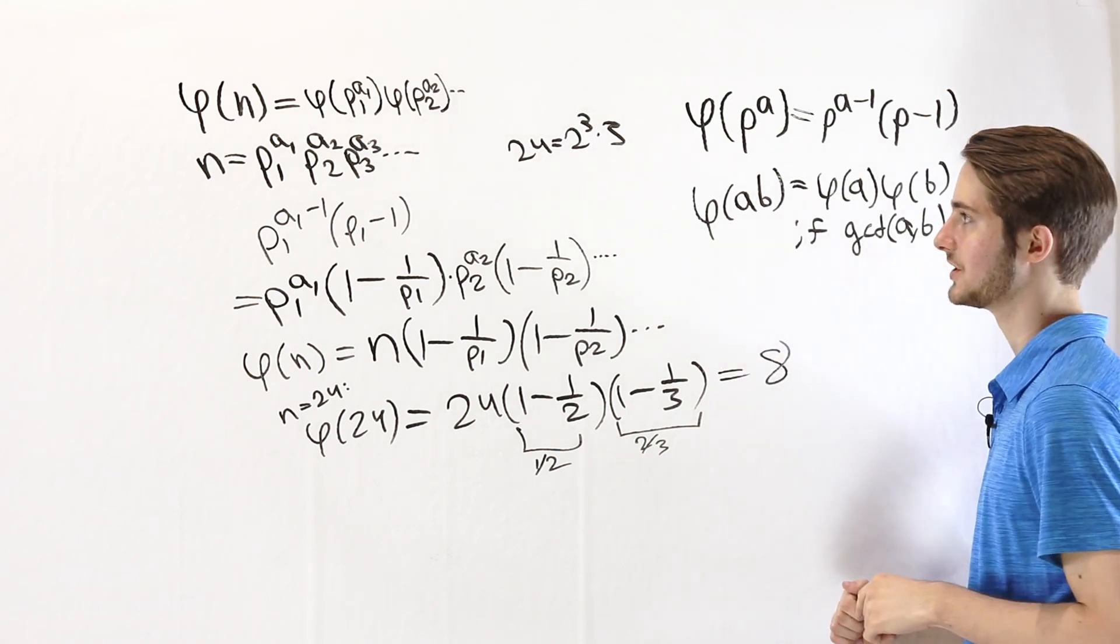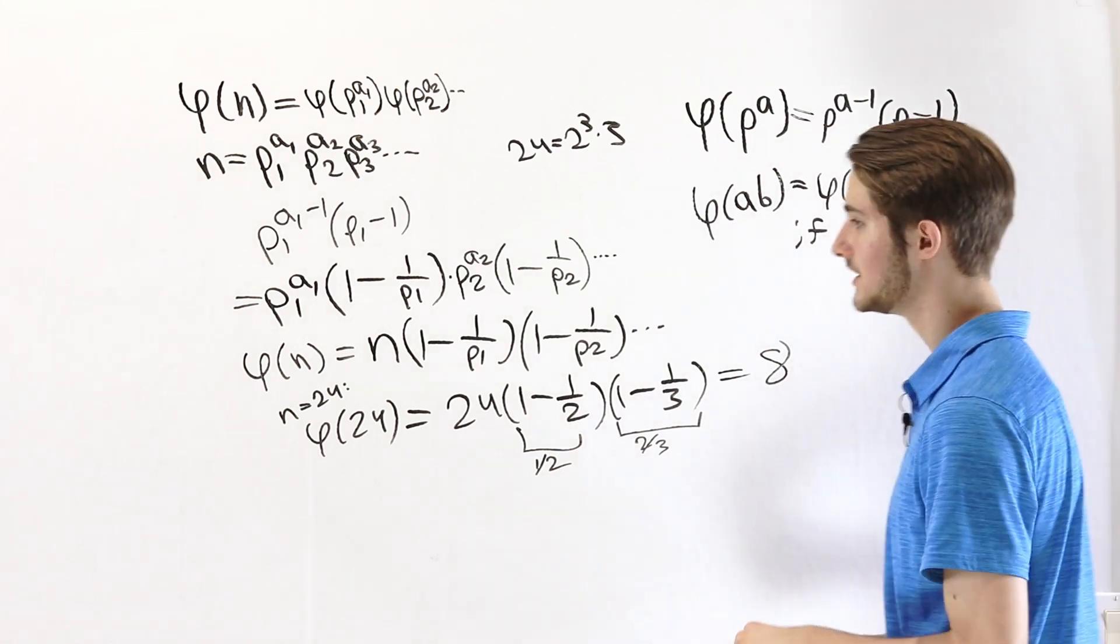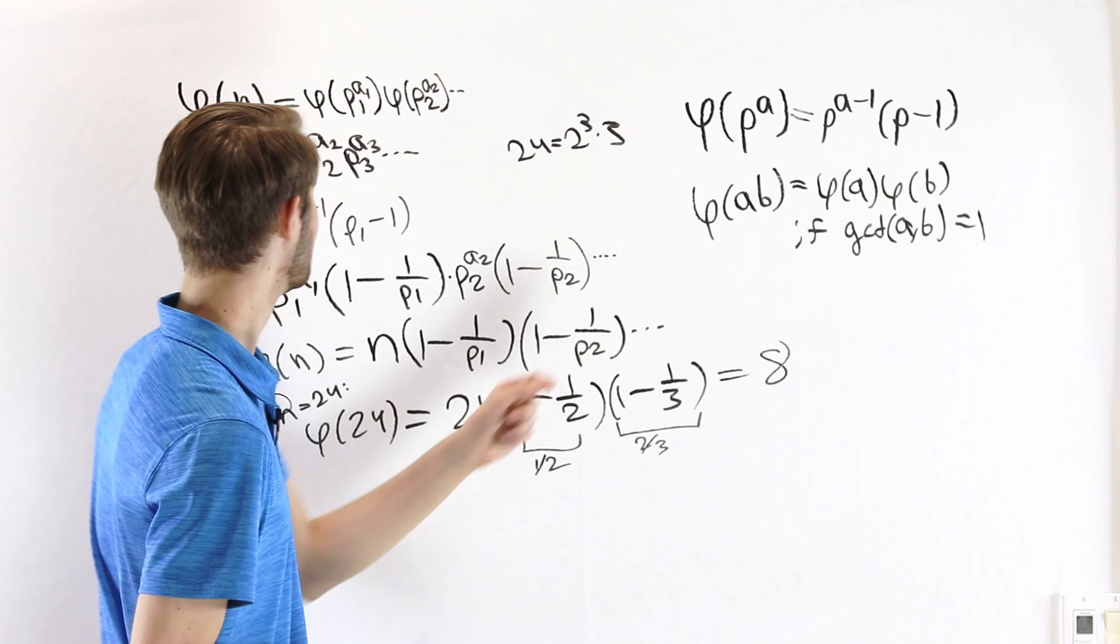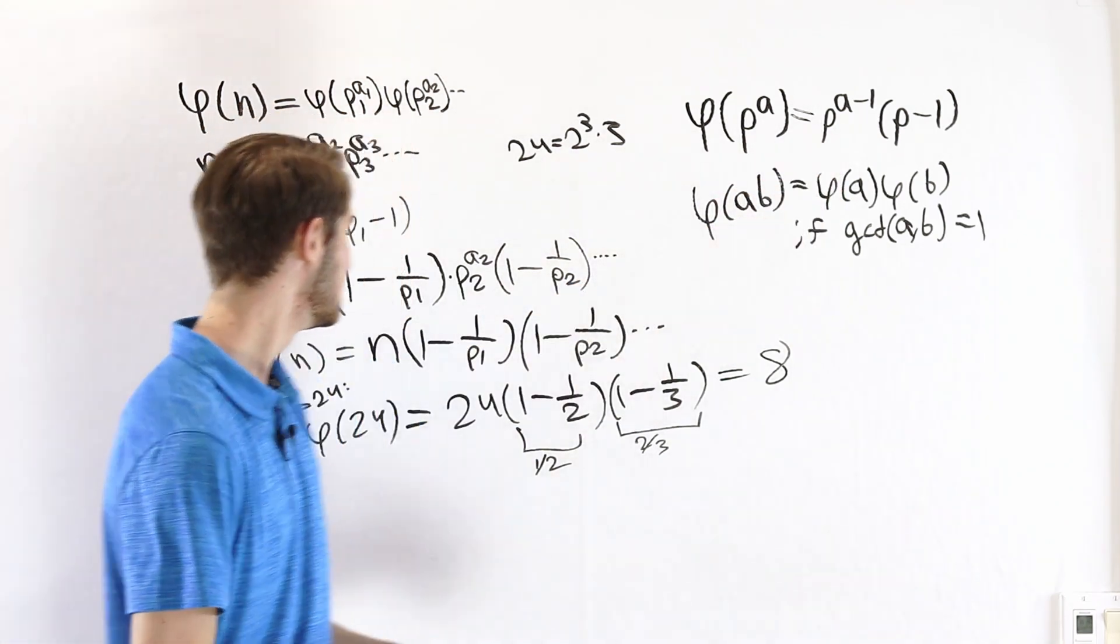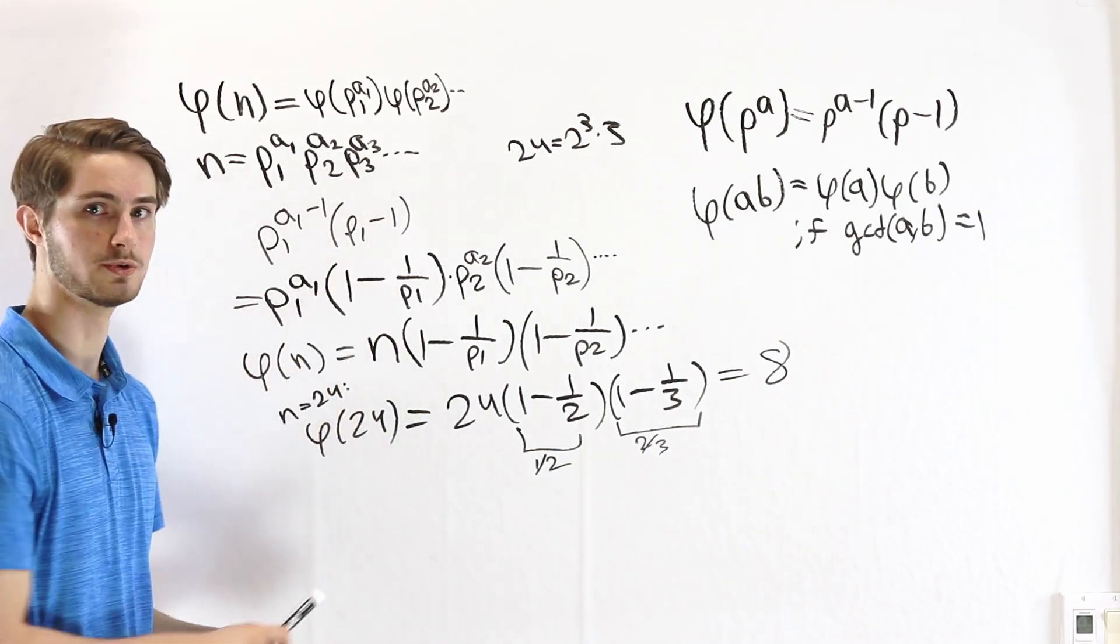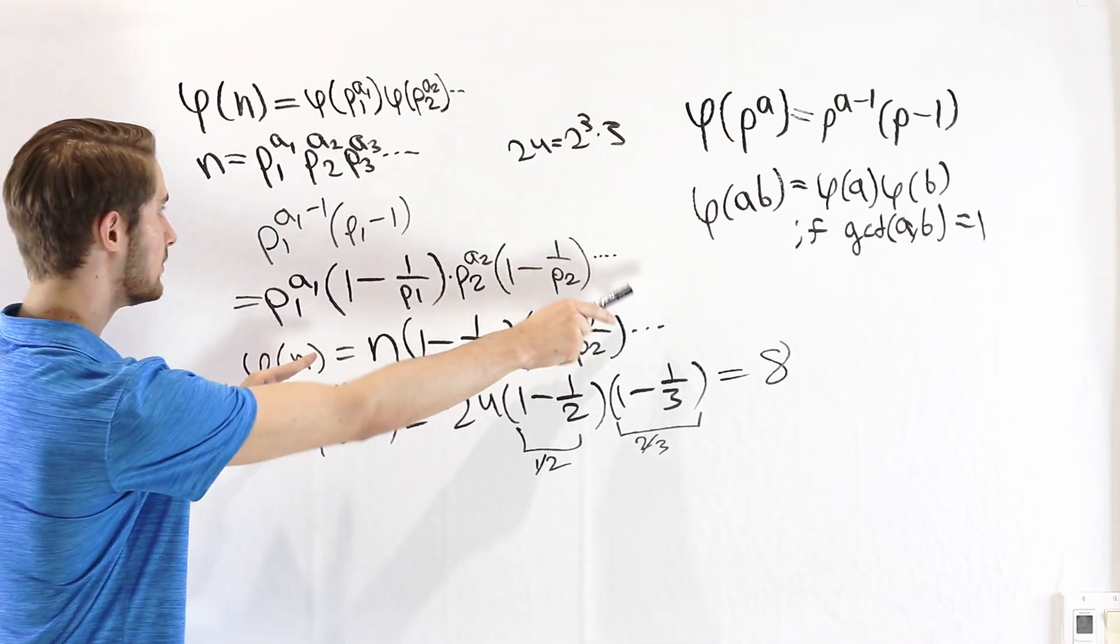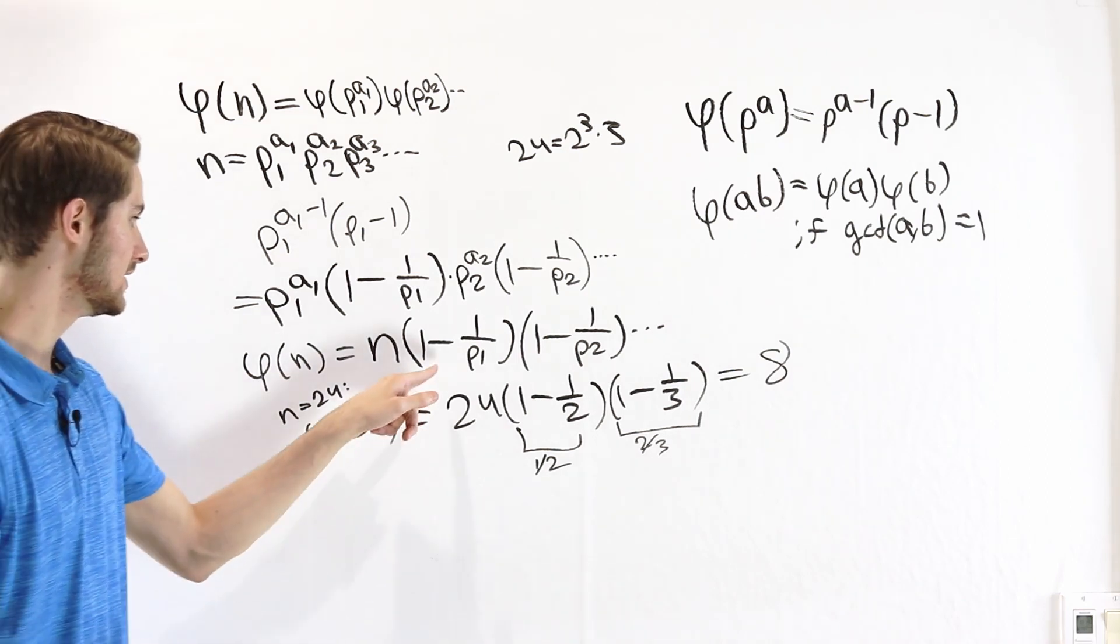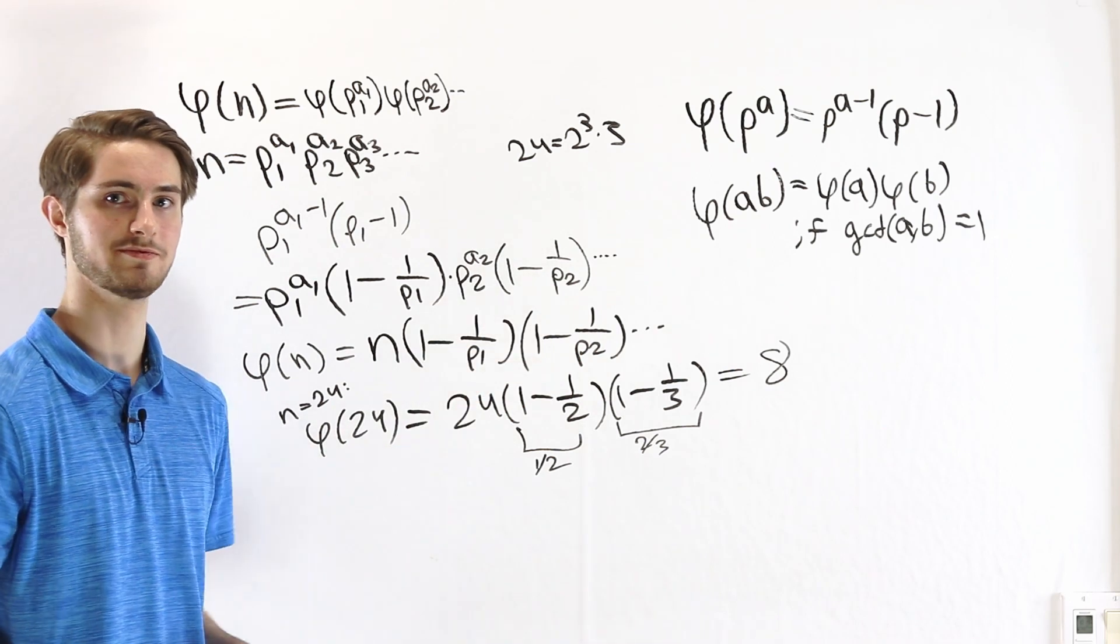So that is the explicit formula for Euler's totient function. The way that we arrive at that formula is using the fact that we can split up the totient function into each of the prime powers. And we know the closed form for the prime powers. It's just p1 to the a1 times 1 minus 1 over p1. When we multiply all of those together, we can bring out all the prime powers to get a factor of n in the front. And all that's left is this product of 1 minus 1 over the prime factors.